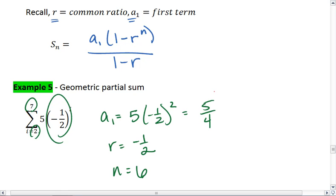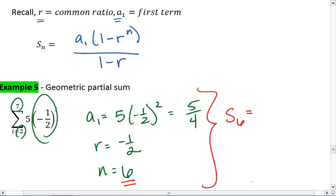We use all of this information and plug it into our formula. So s sub 6, because we are summing 6 terms, will be 5 fourths times 1 minus negative 1 half to the 6, all over 1 minus negative 1 half.